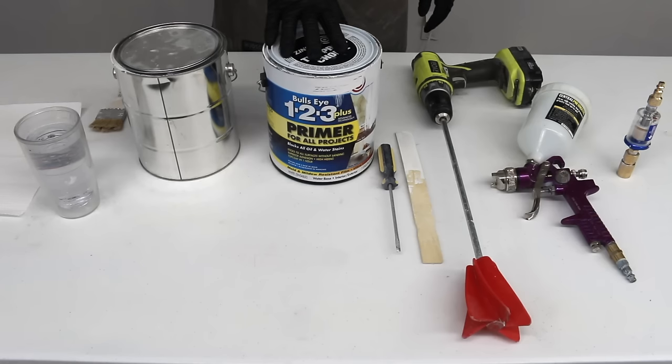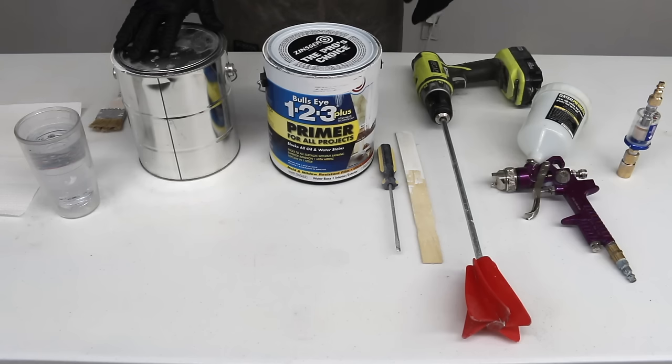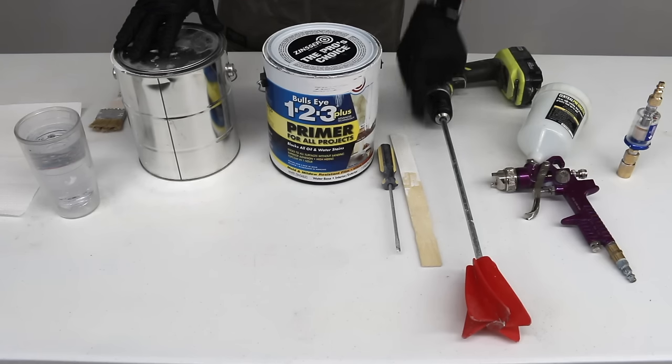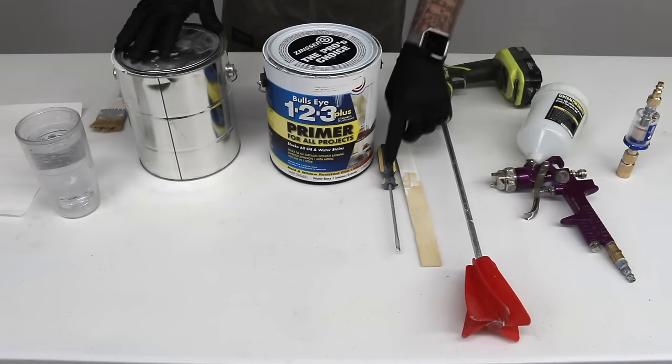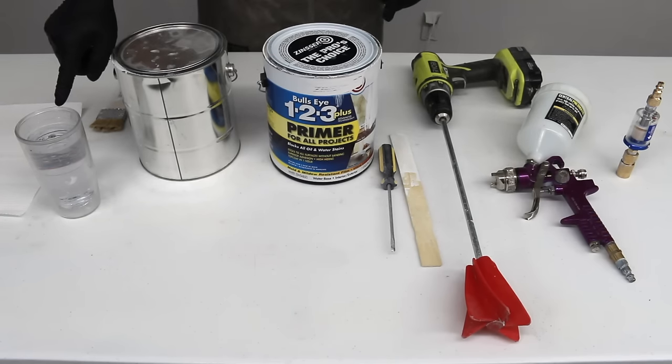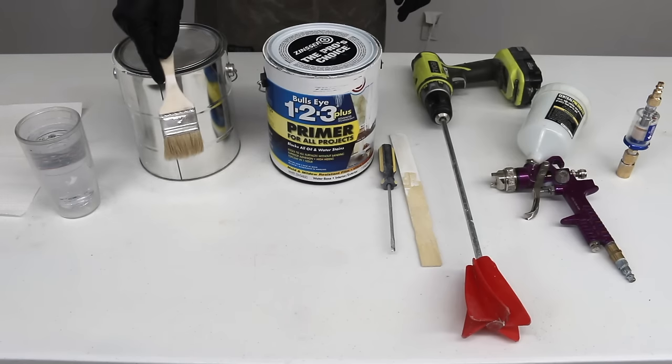But you're going to obviously need whatever paint and primer you're going to be thinning down. You're going to need a spare paint bucket, a stir stick or a mechanical stir stick, I really like these, something to open your paint cans, a cup of water, and a throwaway paint brush.